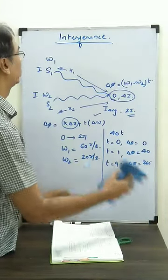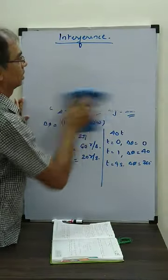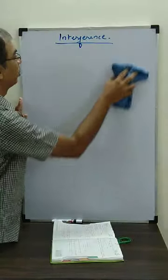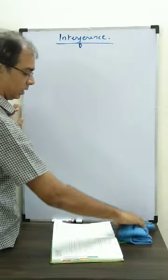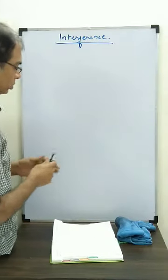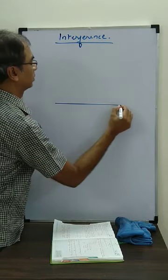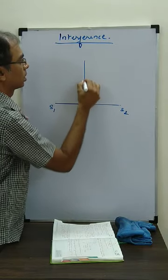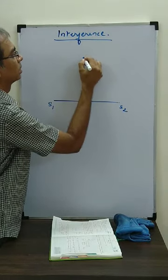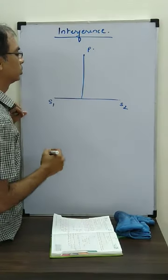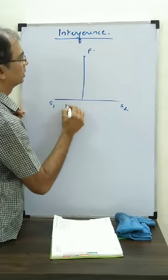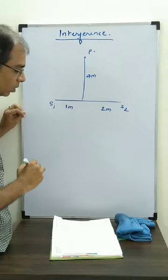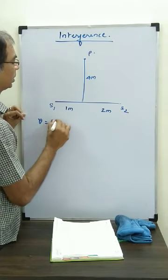Now let us solve some questions based on interference. We will clarify many confusing points through numericals only. Two sound sources are given, S1 and S2. This is the point where the sound from both the sources is moving. Let us say this is 1 meter, this is 2 meter, and this is 4 meter. Speed of sound is given 350 meter per second.